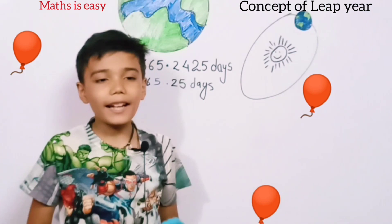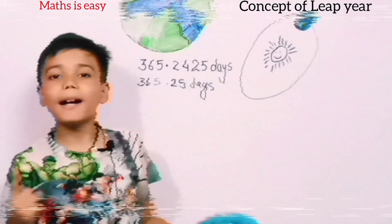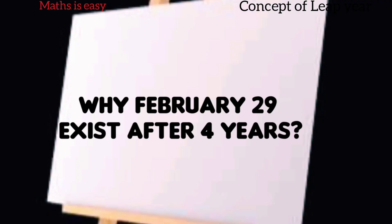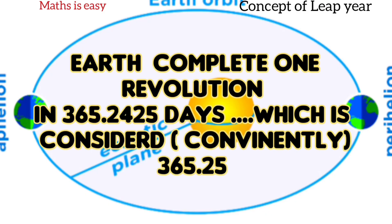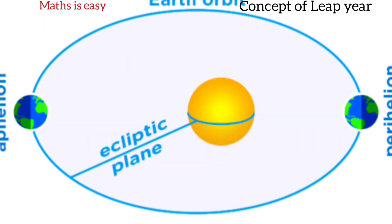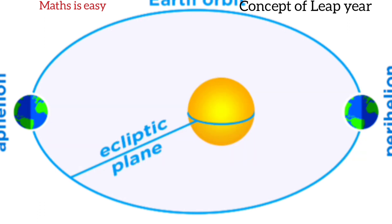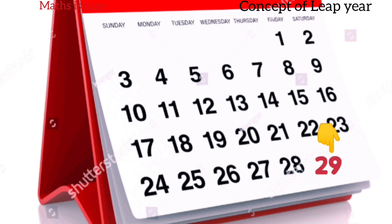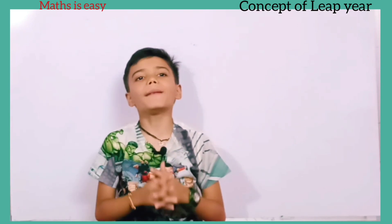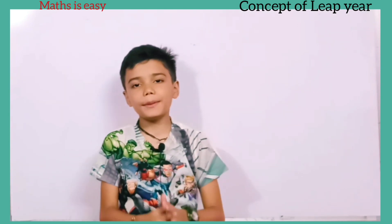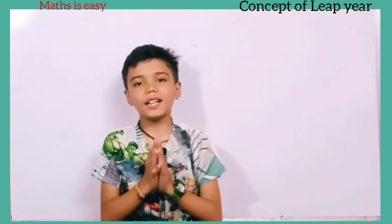People who are born on February 29 celebrate their birthday only every four years. A leap year occurs every four years to synchronize the calendar year with the solar year.